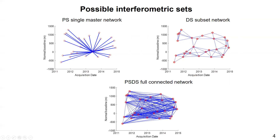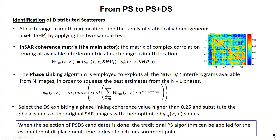How do we identify a good DS? To enhance their signals, a number of pixels sharing the same statistical behavior can be exploited. In each location, we find the family of statistically homogeneous pixels and apply two-sample tests. We can then compute the sample coherence matrix by taking advantage of each family. The coherence matrix is our main actor of the technique, and it is exploited to estimate the linking phase with an optimum from all possible interferometric phases.